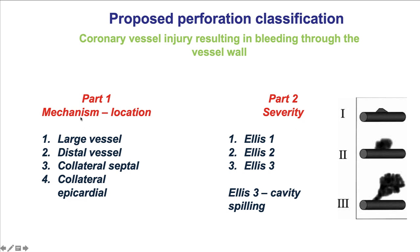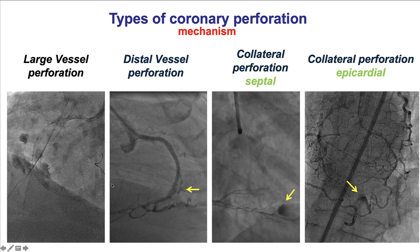Another classification that is very useful is based on mechanism of the perforation, because this one has direct implications on treatment. This divides coronary perforations into three main categories: large vessel, distal vessel, and collateral perforation. Large vessel perforations are perforations of a main coronary vessel, for example the mid-right coronary artery, as shown in this case. Distal vessels are at the ending of the coronary arteries, and these are usually caused by distal guide wire exit. Collateral perforations are complications happening during CTO intervention using the retrograde approach, and can be subclassified into septal collateral perforations, that usually do not cause significant consequences, and epicardial collateral perforations, that can be more dangerous. Those complications happen during CTO-PCI and will not be discussed in this video.